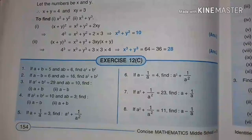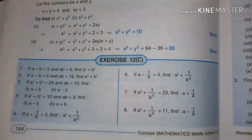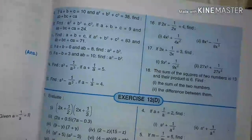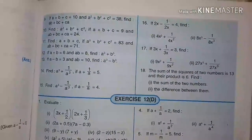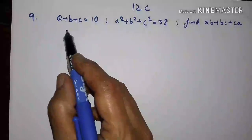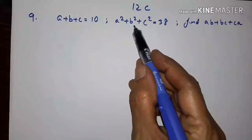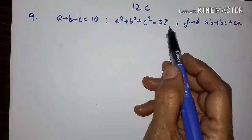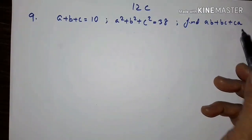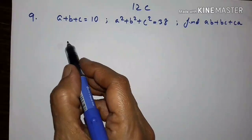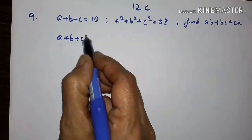Today we shall solve a few problems from Exercise 12C, Concise Mathematics 8th class. Here, a plus b plus c is equal to 10 and a squared plus b squared plus c squared is equal to 38. We have to find ab plus bc plus ca. Let us write the formula first.